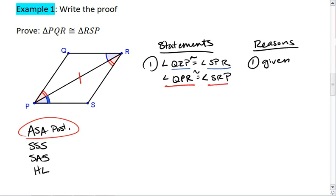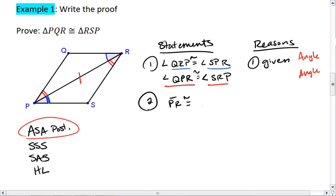That takes care of both angles in the angle side angle postulate. Next, we know that PR is congruent to PR, and that's by the reflexive property.